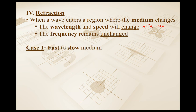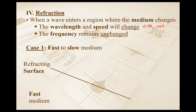Let's look at the two cases from a two-dimensional bird's eye view perspective. I have a refracting surface with a fast medium on the bottom and a slow medium on the top. The analogy I'm going to use is a marching band — starting in a faster medium, which is like marching on concrete, and then walking into a slower medium, which is going to be mud. Obviously it's more difficult to walk through mud compared to concrete.